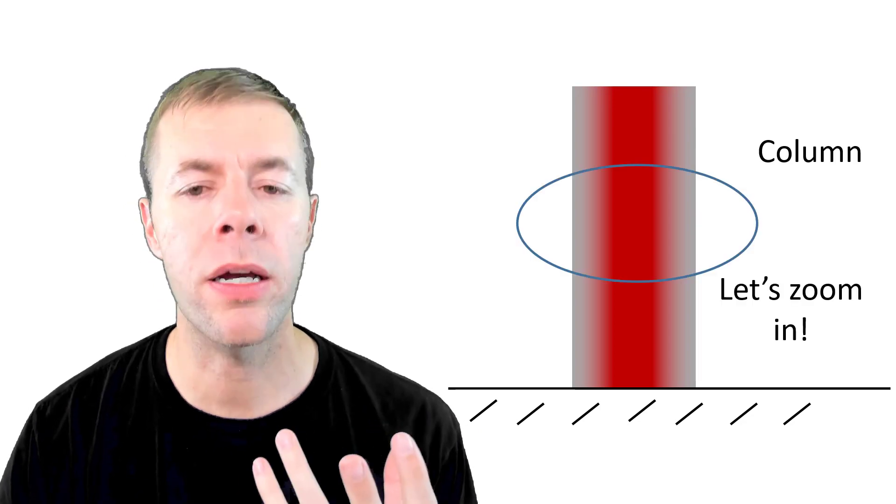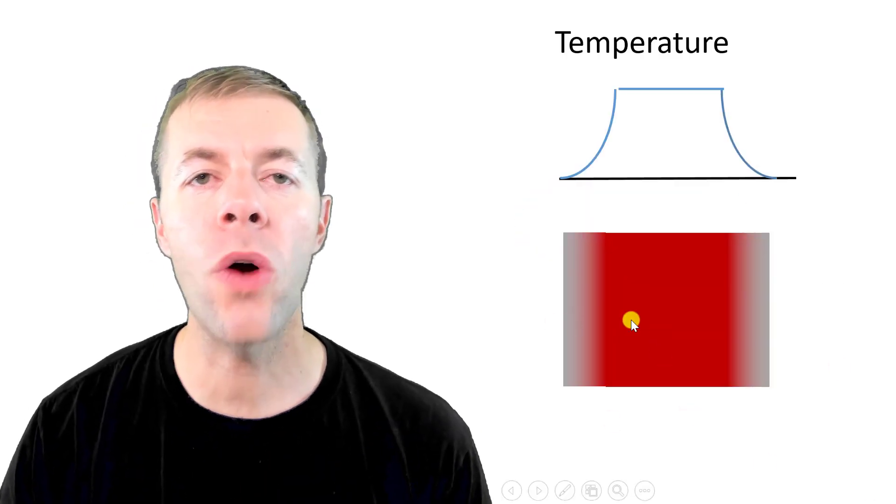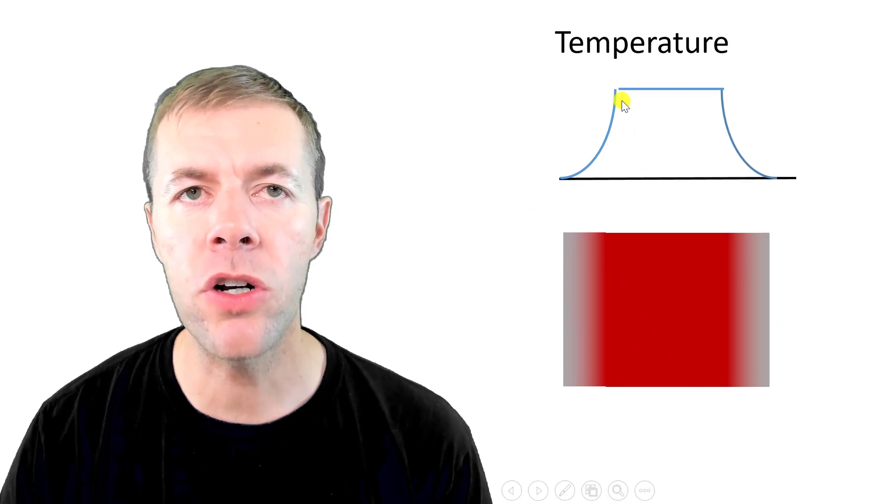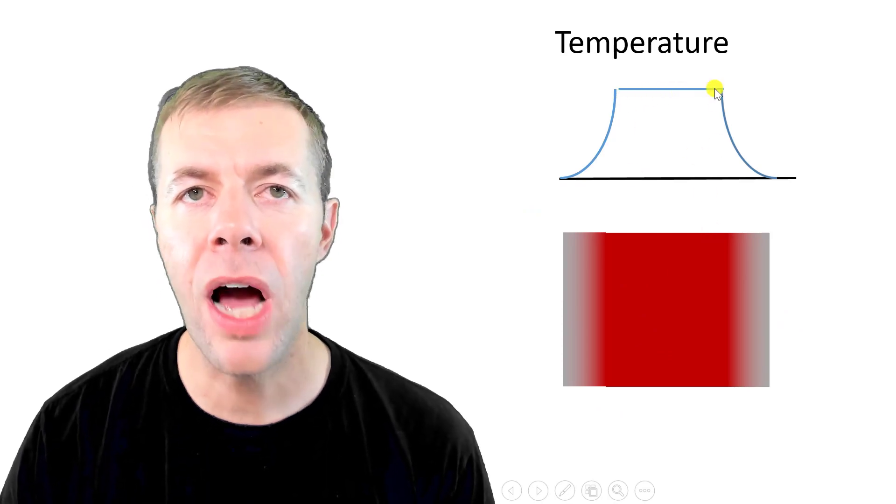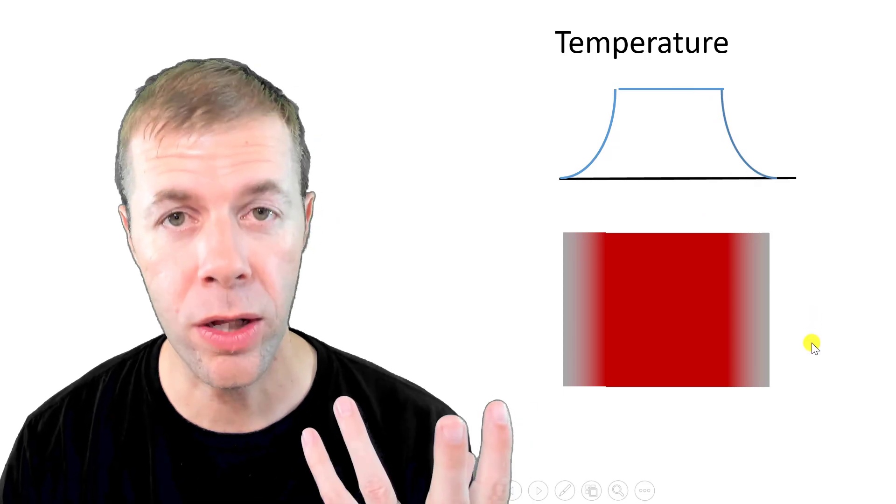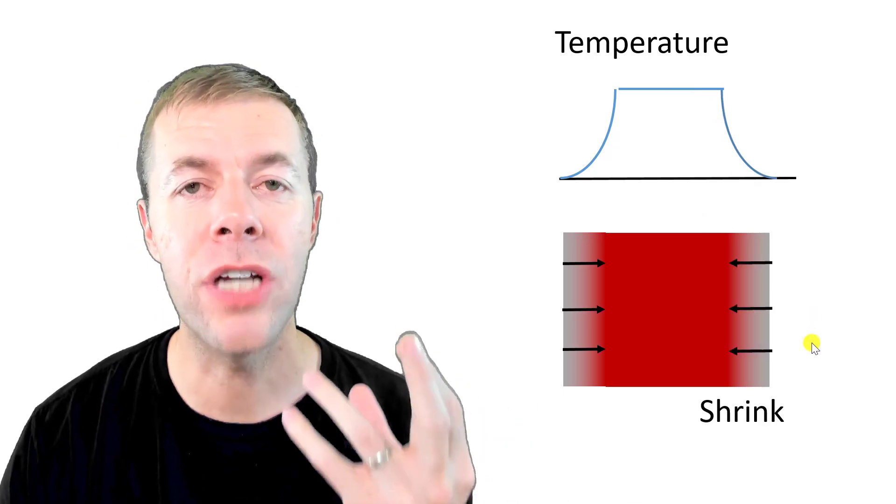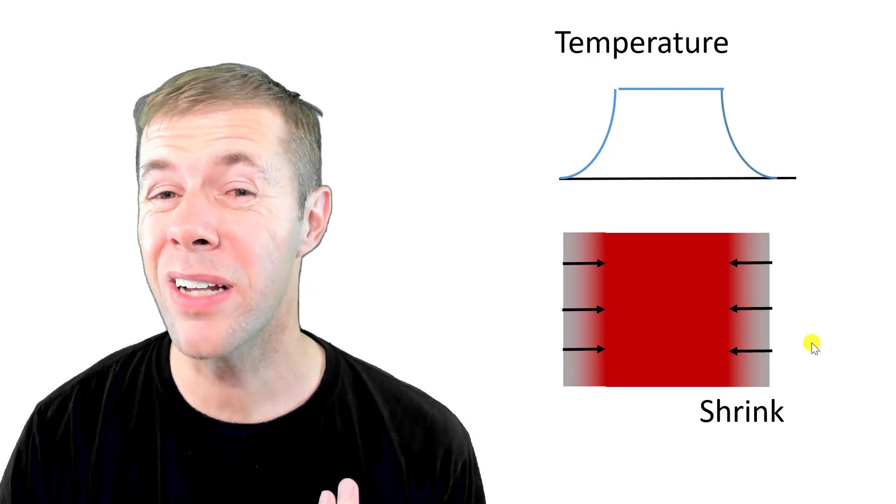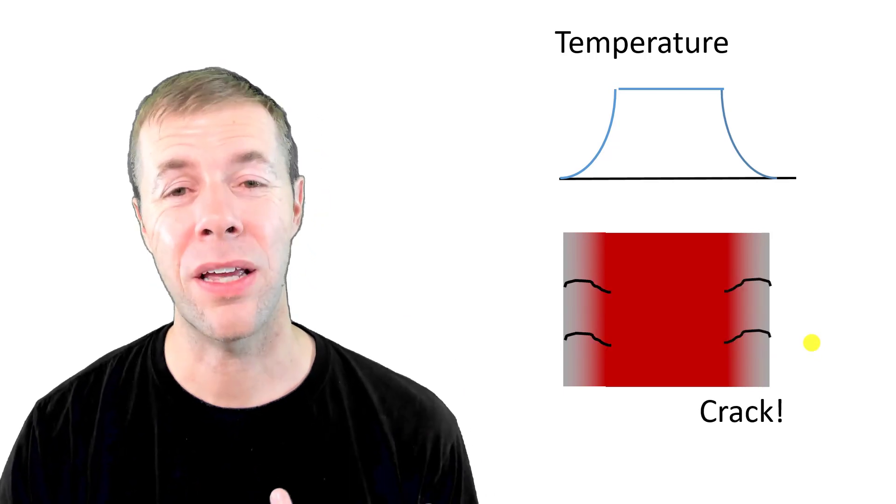Let's zoom in and see what I'm talking about. If we look over the cross section, in the very center of the column, the temperature is high. On the outside, the temperature goes from high to low pretty quickly. This outside area is going to shrink. Once it shrinks, it's going to create stresses that causes cracking.